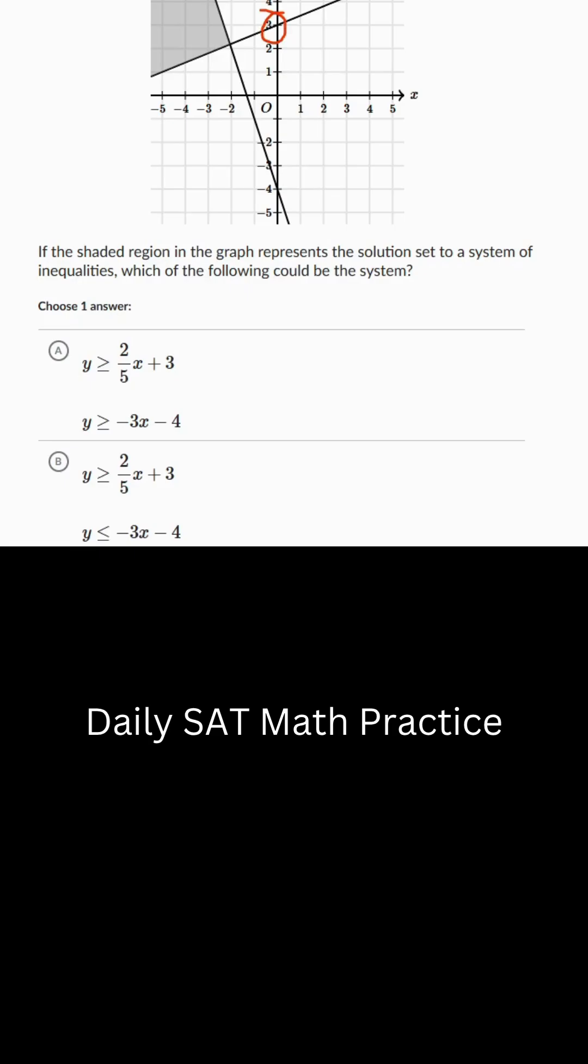Now this one is going to be the 2 fifths x plus 3 just because the y intercepts at 3. So if we see, let's take this value here of negative 3 and then 3, y equals 3.